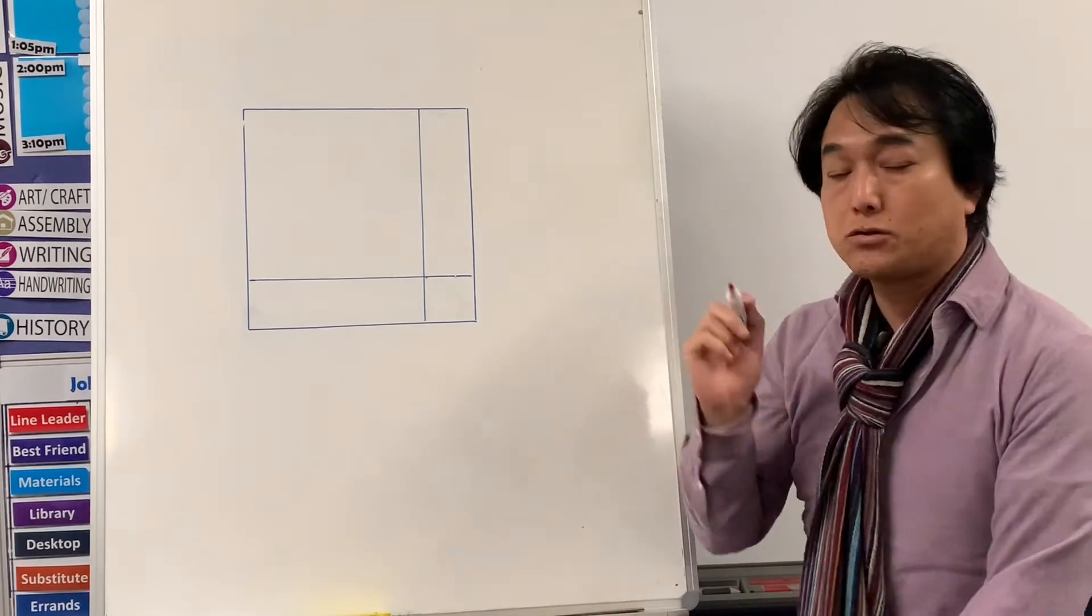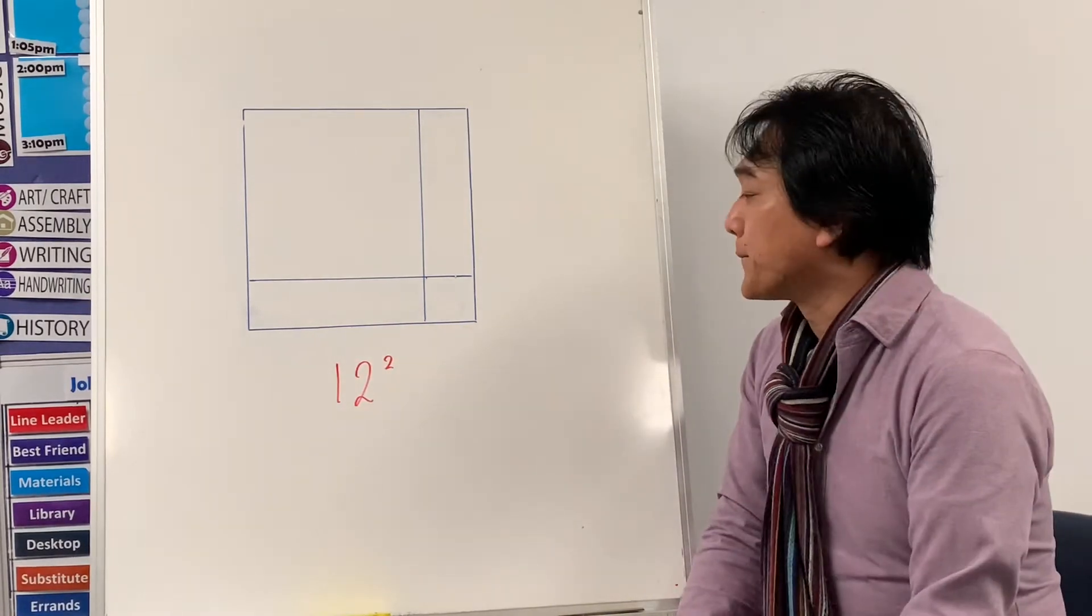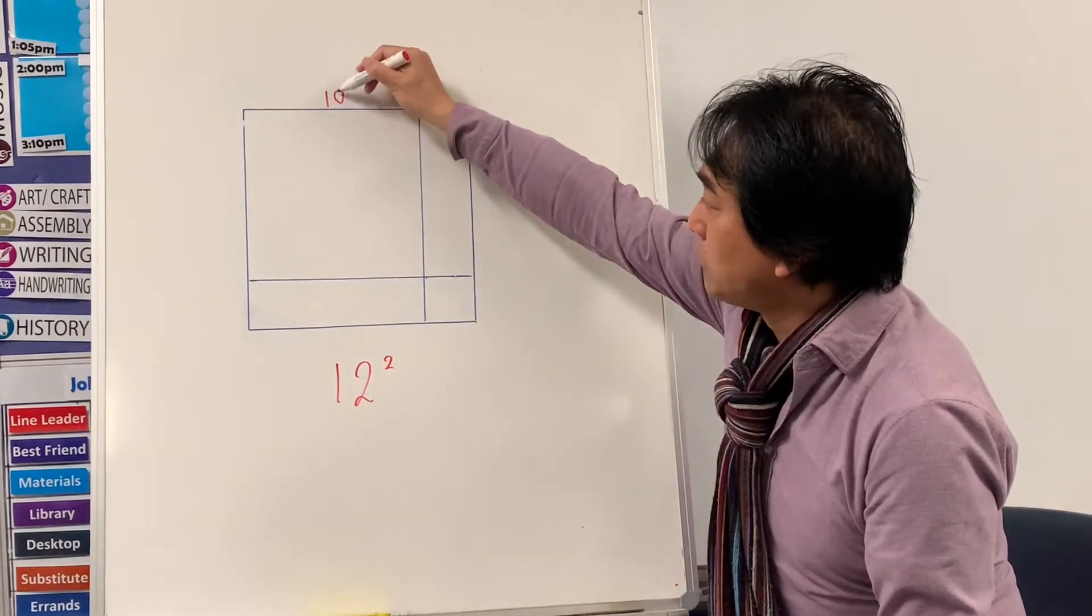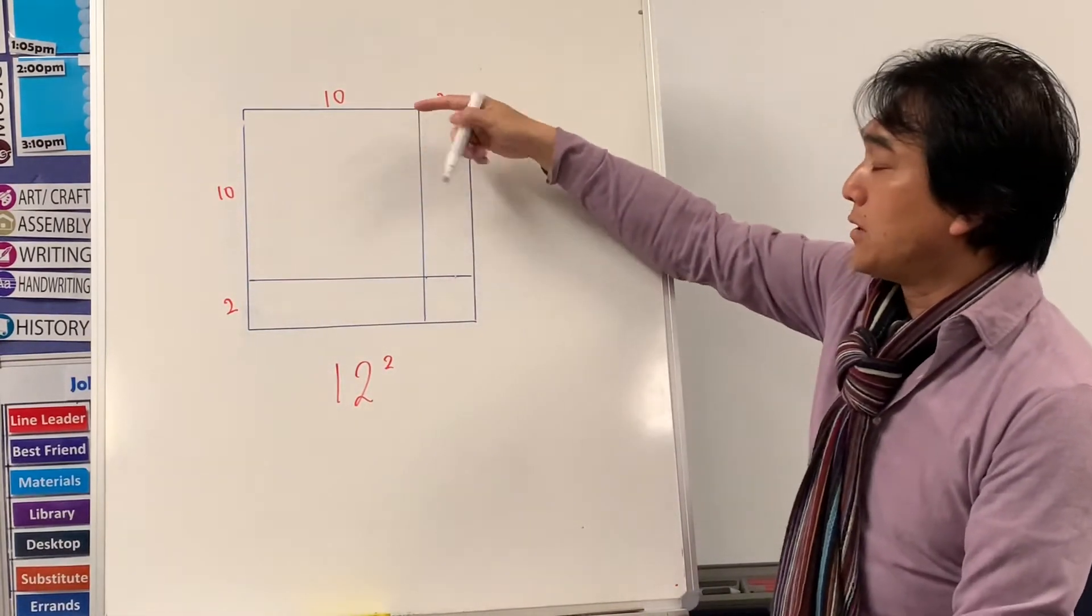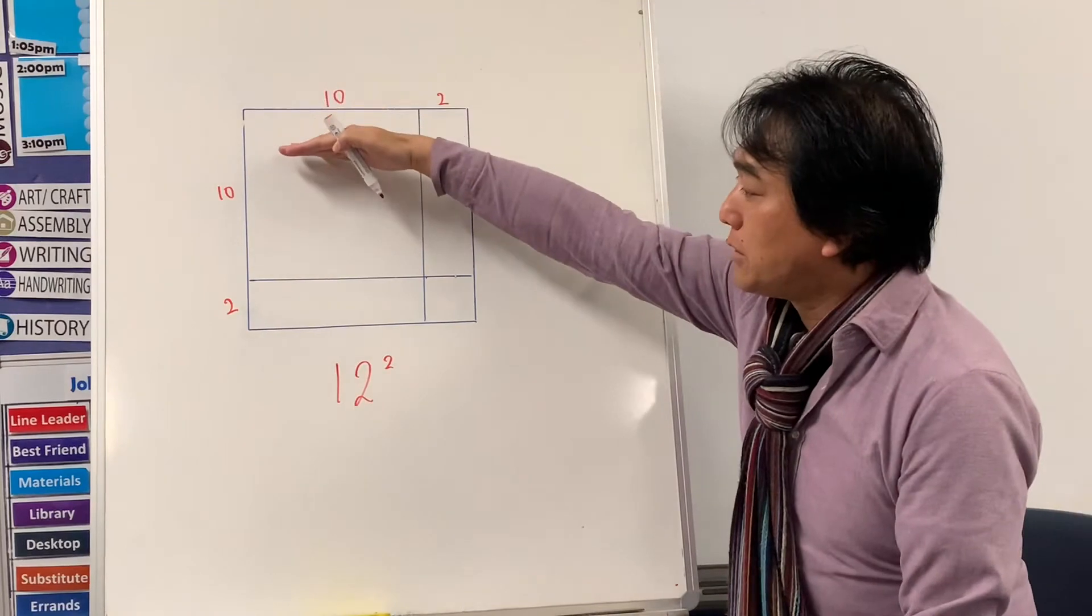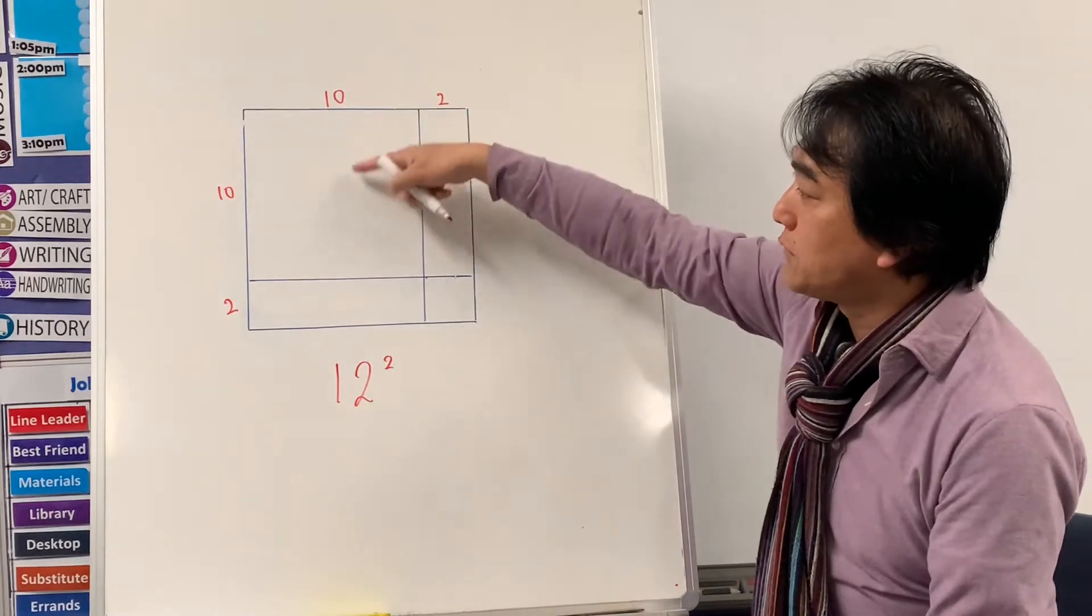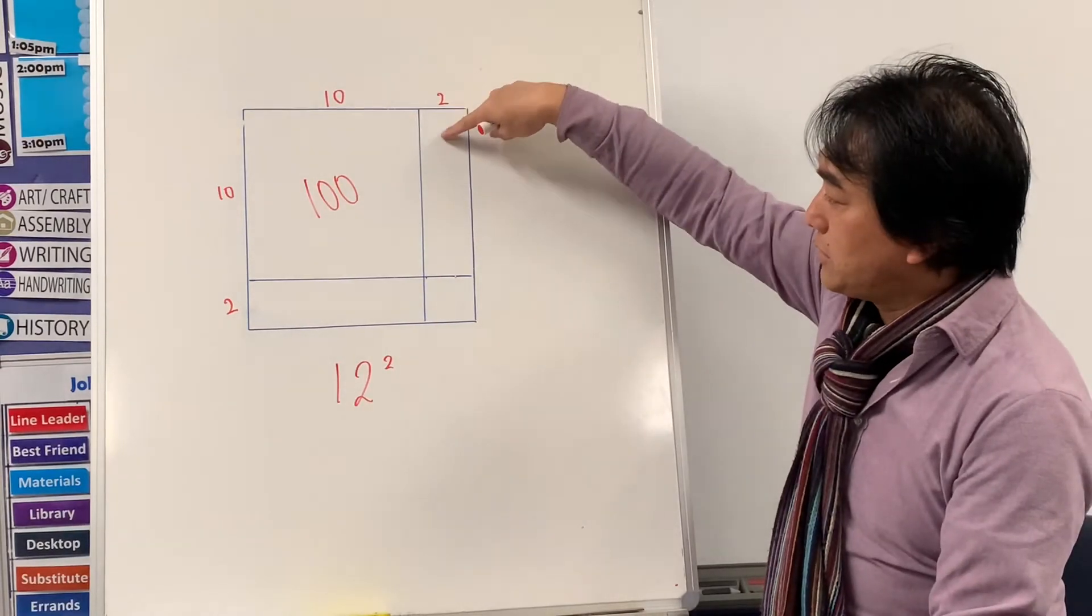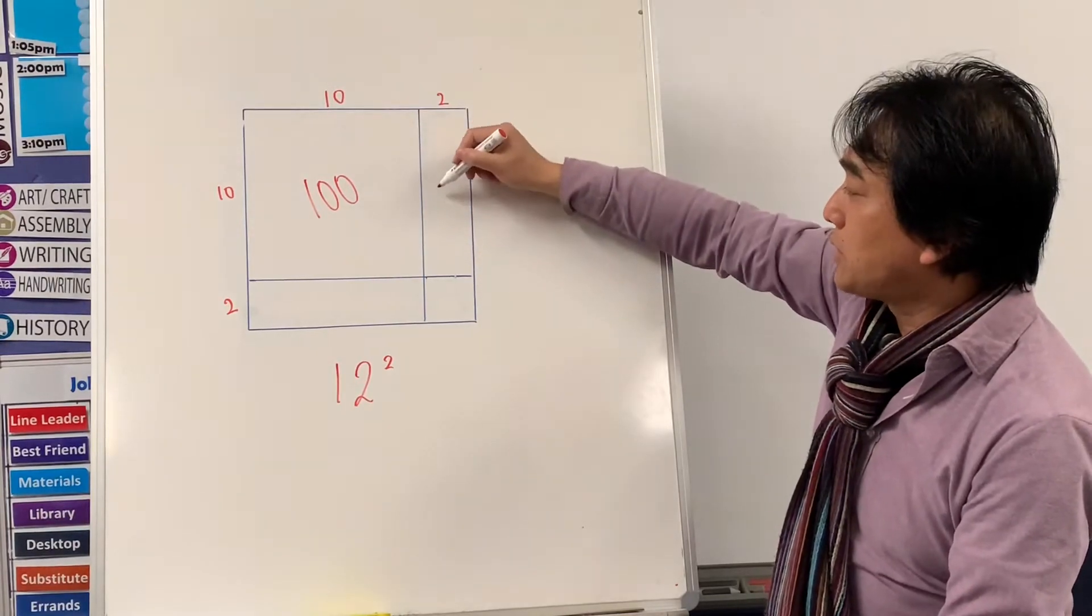Let's try twelve times twelve. We write like this, twelve squared. So with the square or area model, ten and two, ten plus two is twelve. Imagine you have twelve dots. There are twelve rows of twelve dots. In this square here, we have ten rows of ten dots. Ten times ten is hundred.